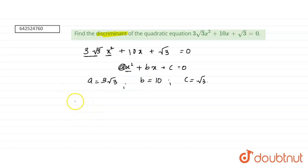So, discriminant is discriminant equals b square minus 4ac.